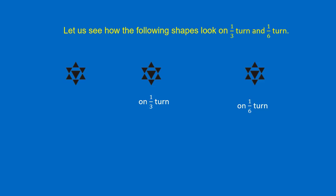Let us see how the following shapes look on one-third turn and one-sixth turn. Let us see the first shape — how does it look on one-third turn? It looks the same. Let us see how it looks on one-sixth turn. It doesn't look the same. So the first shape looks the same on one-third turn but doesn't look the same on one-sixth turn.